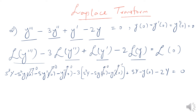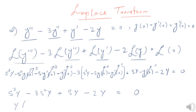After substituting the zero initial conditions, we are left with s cubed Y minus 3s squared Y plus sY minus 2Y equals 0. Taking Y as a common factor gives us Y times (s cubed minus 3s squared plus s minus 2) equals 0.